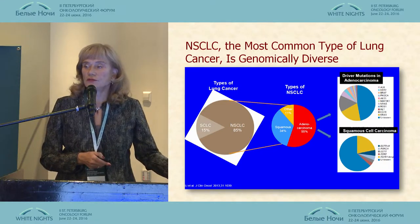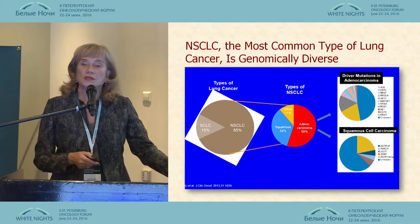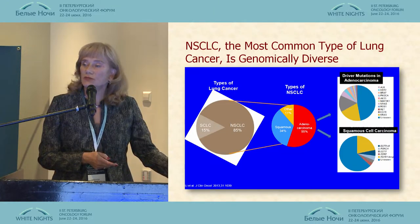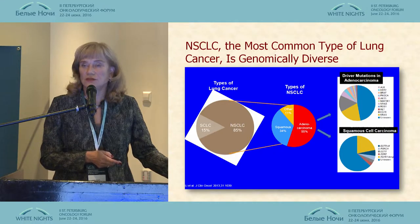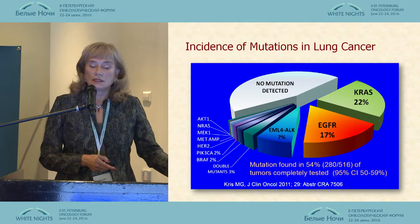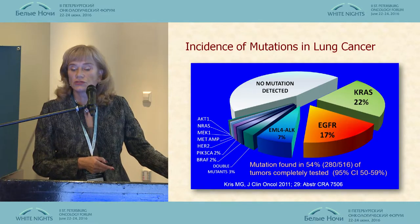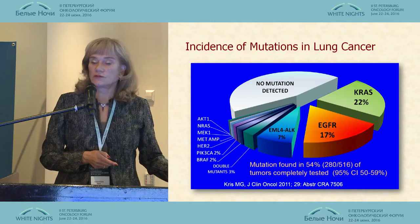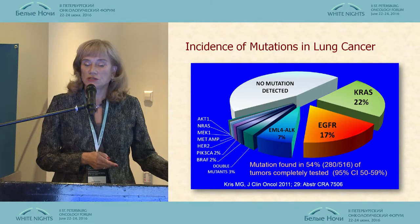For squamous cell carcinoma the relevant mutations are FGFR1, DDR2, and also EGFR, but not in the same percentage of cases. This picture shows that in squamous and adenocarcinoma patients we have different kinds of mutations, and because of that we must have a different approach for treatment of these tumors. Chris and others investigated more than 500 tumor specimens and showed that mutation was found in 54% of specimens — most of them were KRAS mutation, EGFR mutation, and EML4-ALK mutation in 7% of cases.